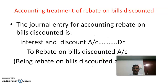How do we make the accounting treatment for rebate on bills discounted? The journal entry is: Interest and Discount Account — Debit; To Rebate on Bills Discounted Account — Credit. The narration is: being rebate on bills discounted adjusted.